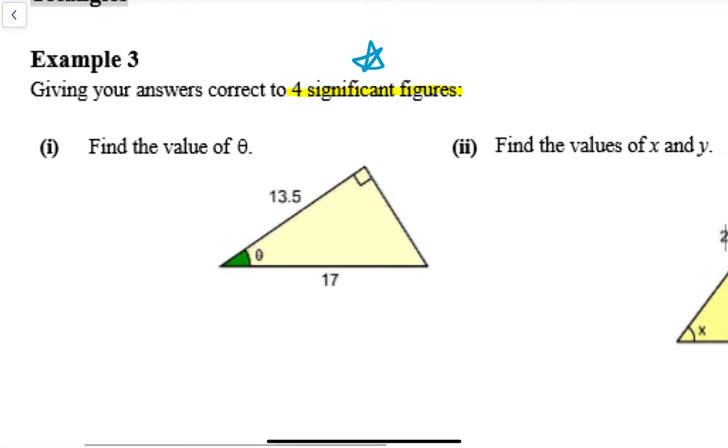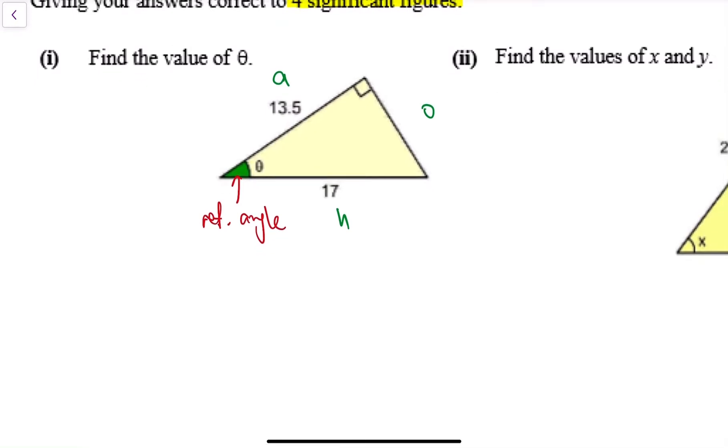Find the value of theta. I have the reference angle given to you, so let's label the sides first. That should always be your first step: H, O, and A. Then if I want the angle, I need to make a decision: should I use tangent, cosine, or sine? It will be O over A, A over H, and O over H.